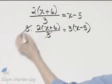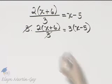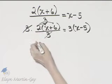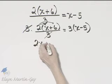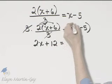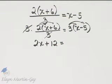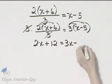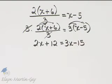Now, the left side, the 3's divide out like we want, and I'll go ahead and use the distributive property. 2 times x is 2x plus 2 times 6 is 12 is equal to, and let's use the distributive property again, 3 times x is 3x minus 3 times 5 is 15.